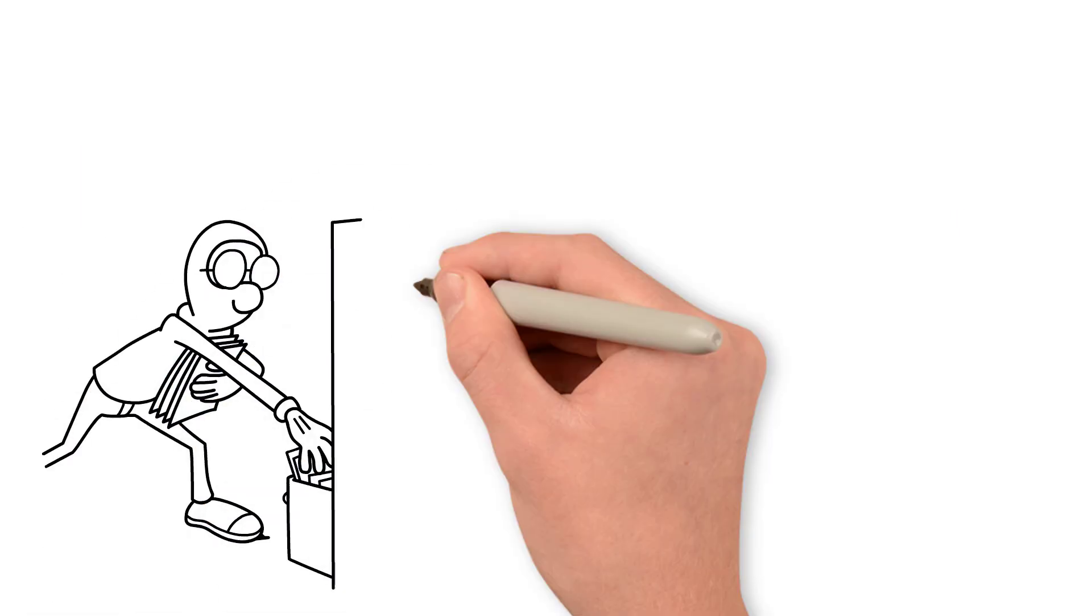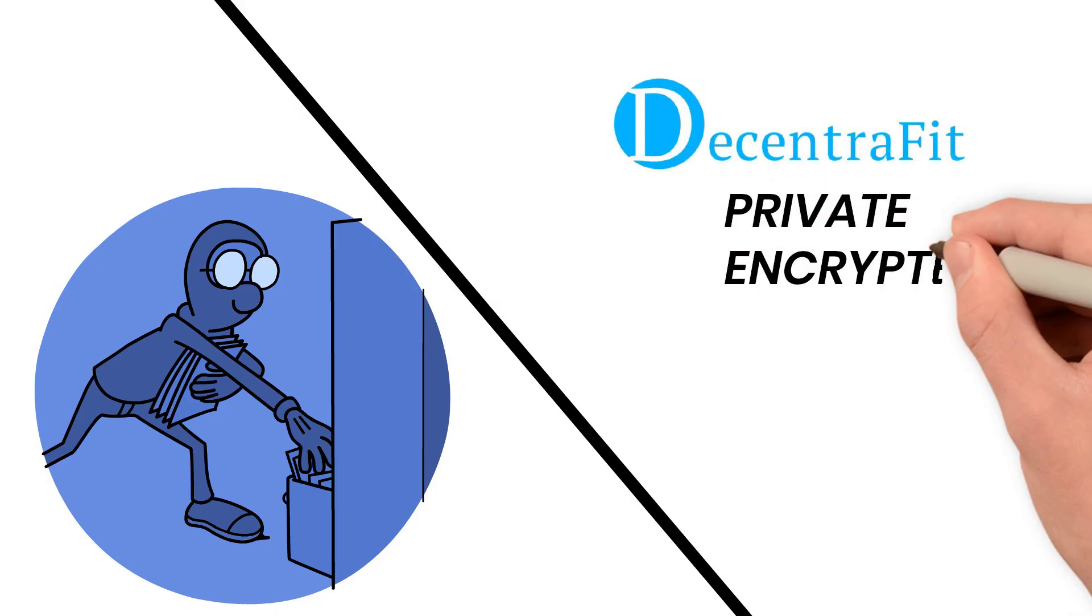Traditional systems use your data for profit. Proof of Activity gives it back to you – private, encrypted, and valuable.